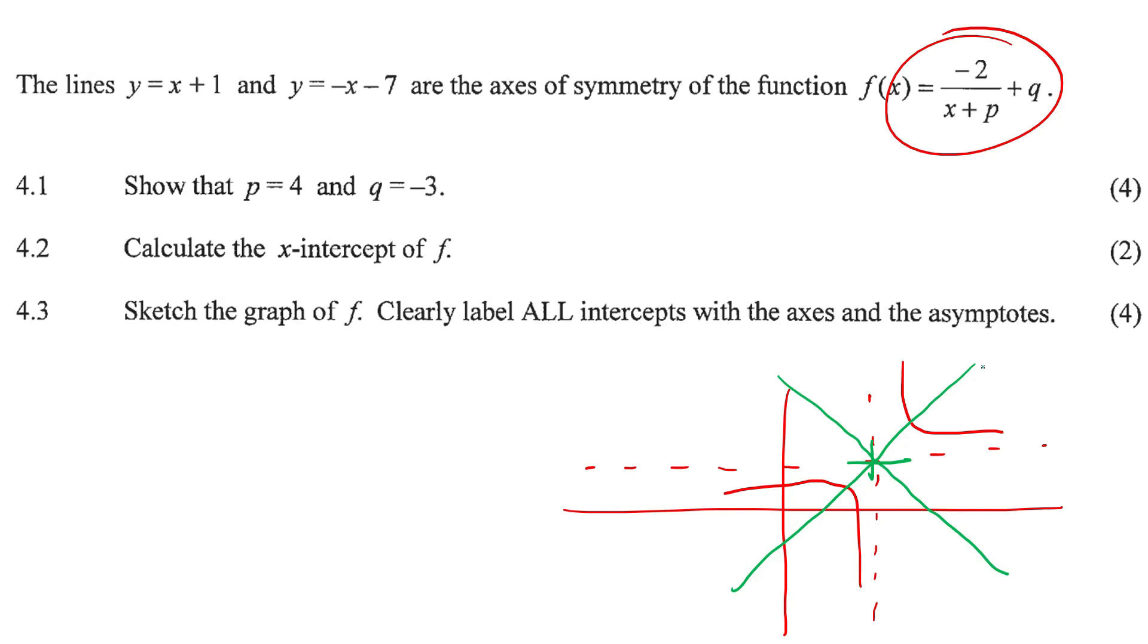And they always have the same gradient. Well, not as each other, but this one always has a gradient of 1, and then this one always has a gradient of minus 1, always. And that's what they're saying. One of them has a gradient of 1, and one of them has a gradient of minus 1. And they're saying that it's the axes of symmetry.